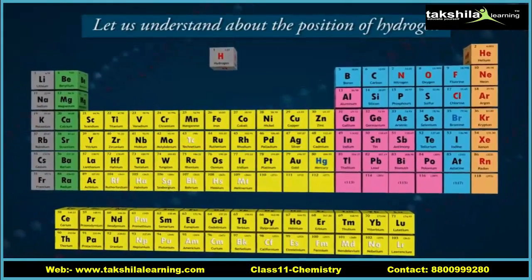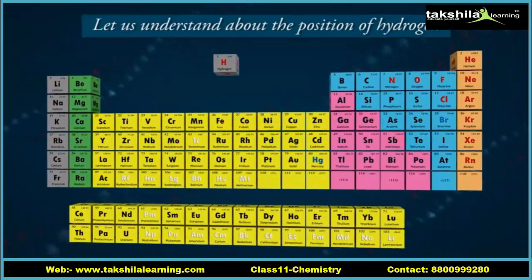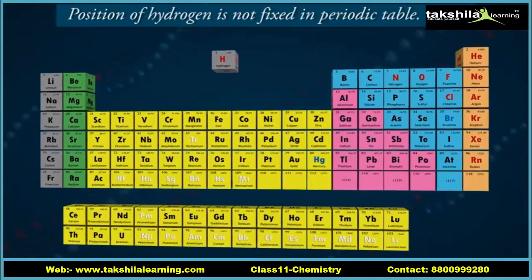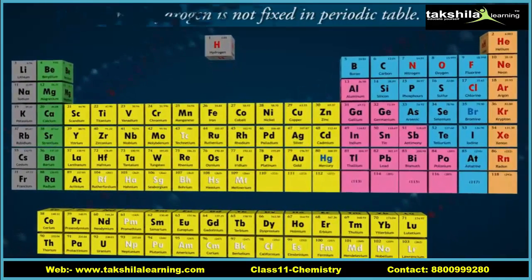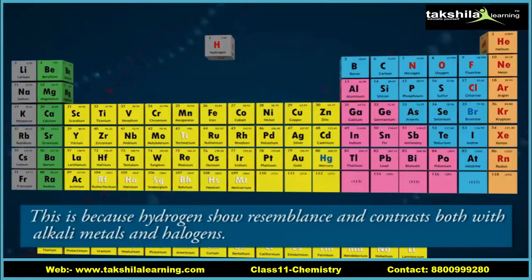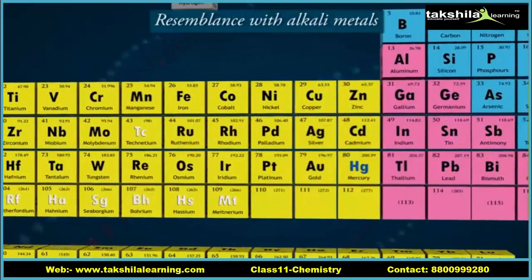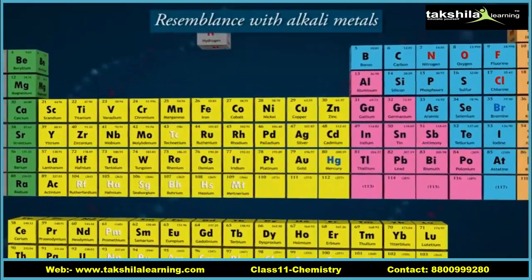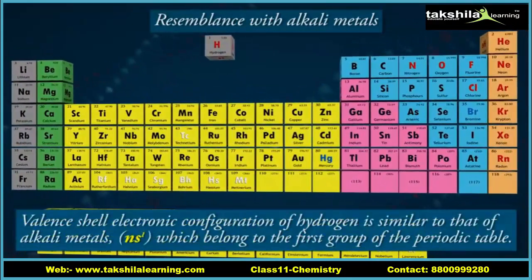The position of hydrogen is not fixed in the periodic table. This is because hydrogen shows resemblance and contrast both with alkali metals and halogens. Let us understand the resemblance with alkali metals — the valence shell electronic configuration of hydrogen.